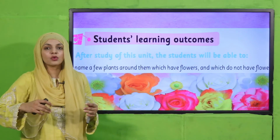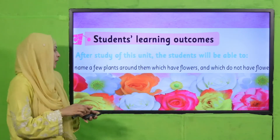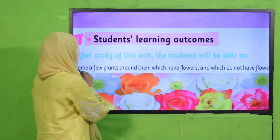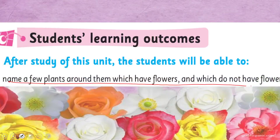The student learning outcome for today — we have covered it before. Today we will perform an activity to identify plants around us which have flowers and which do not have flowers. Students will identify plants and name those which have flowers and those which do not.